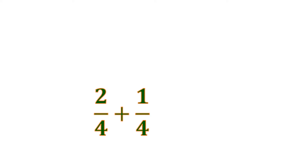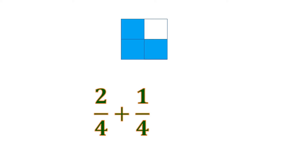Let us visualize first. We have 2 fourths, which is 2 shaded parts out of 4, and we're going to add 1 fourth, or 1 shaded part out of 4. All in all, there are 3 shaded parts out of 4. That means the sum of 2 fourths and 1 fourth is 3 fourths.